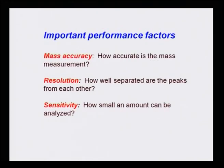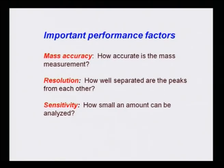Important performance factors for a mass spectrometry machine are: mass accuracy — how accurate the mass measurement is; resolution — how well separated the peaks are from each other; and sensitivity — how small an amount can be analyzed. These machines are very sensitive; only a microgram of compound is enough — kilograms or grams are not required — because they can resolve peaks carefully so each can be attributed to a fragment with very accurate mass measurements.